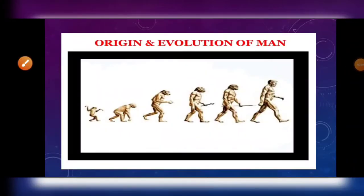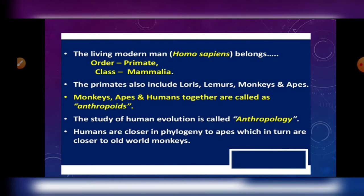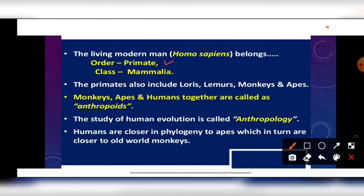The process of human evolution is also known as anthropogenesis and it concerns the evolution of Homo sapiens, the scientific name of human beings. We belong to kingdom Animalia, phylum Chordata, class Mammalia, order Primata, family Hominidae, genus Homo, and species sapiens. Order Primata also includes loris, lemurs, monkeys, and apes. Monkeys, apes, and human beings together are known as anthropoids. The branch of biology that deals with the study of human evolution is known as anthropology.